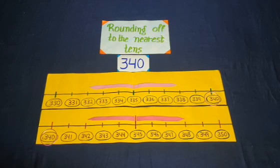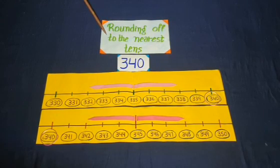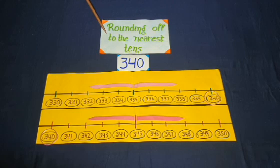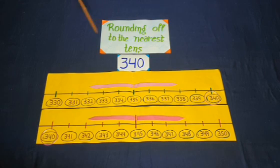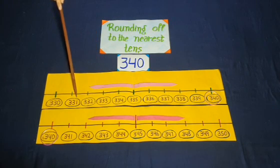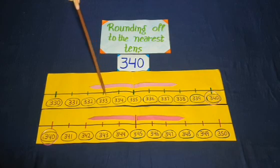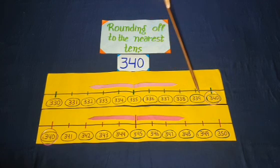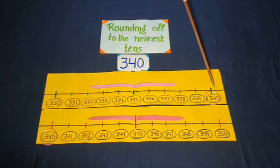Now we do rounding off to the nearest tens which gives the figure of 340. We do rounding off to the nearest tens — look at the digit at the 1's place. If digits 4, 3, 2, 1 are at the 1's place, these numbers go backward. If digits 5, 6, 7, 8, and 9 are at the 1's place, these numbers go forward.